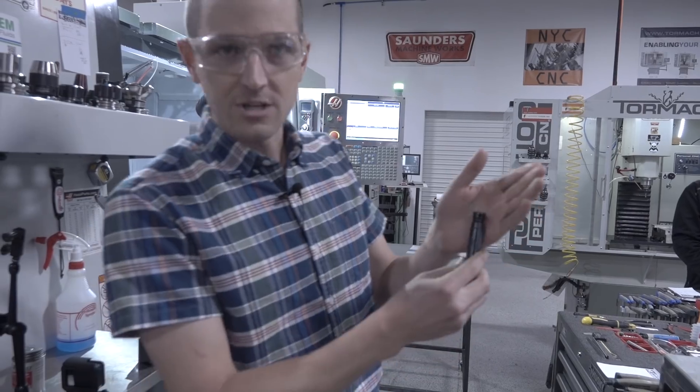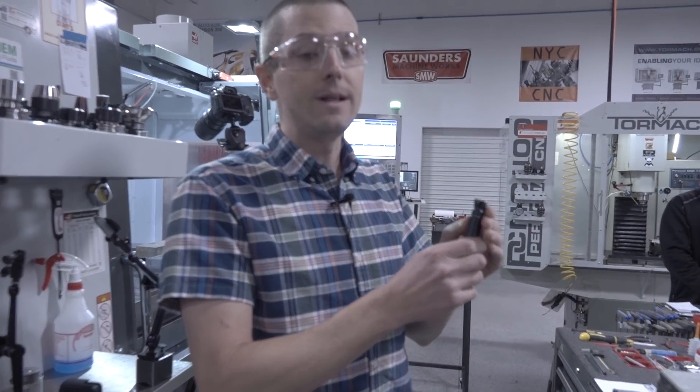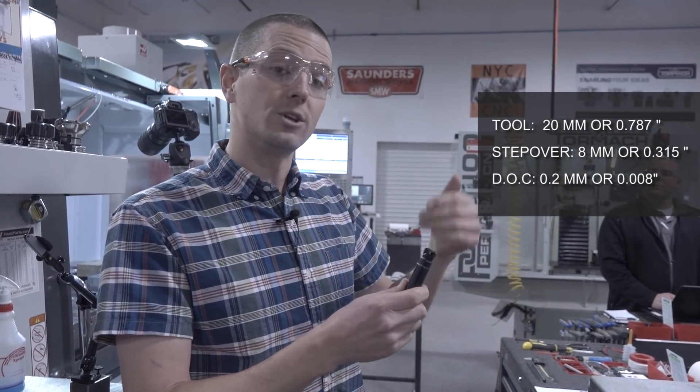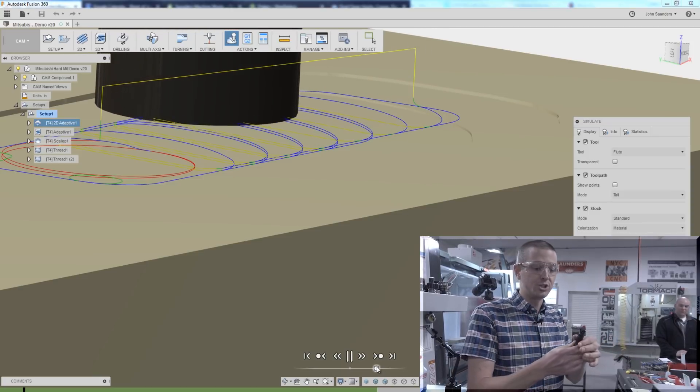So we're going to take a very strange depth of cut. It's kind of like a high-feed machining cut. So it's 8 millimeters step over out of a 20 millimeter tool, only about 8 thousandths or 0.2 millimeters depth of cut. So you can see here in the Fusion 360 simulation, this is not at all what we're used to machining.